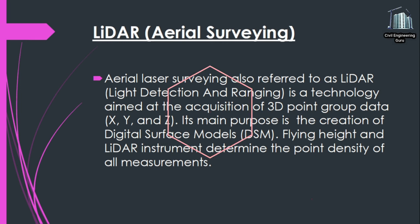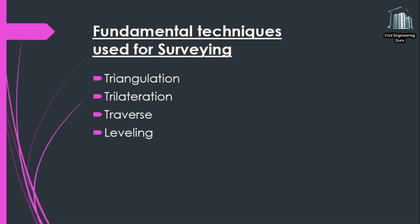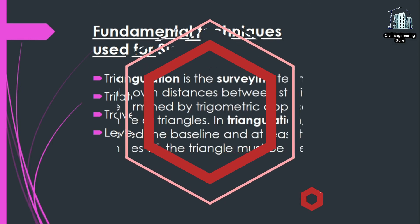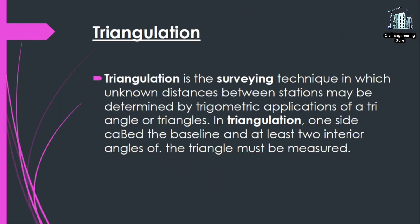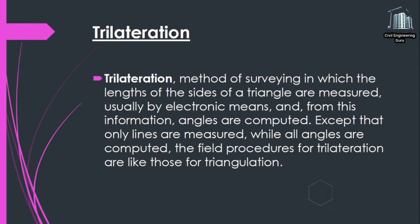There are various fundamental techniques used for surveying: triangulation, trilateration, traverse, and leveling. Triangulation is the surveying technique in which unknown distances between stations may be determined by trigonometric applications of a triangle or triangles. In triangulation, one side called the baseline and at least two interior angles of the triangle must be measured.